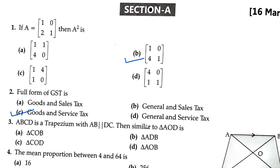The third one: ABCD is a trapezium with AB parallel to DC. You have to find the triangle similar to triangle AOD. The correct answer is ACOD — always remember what is being asked.